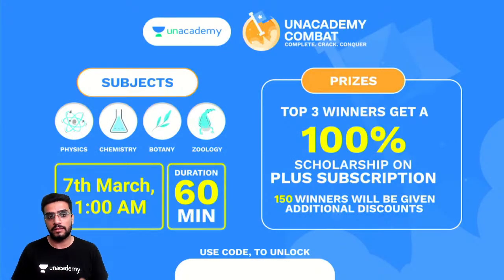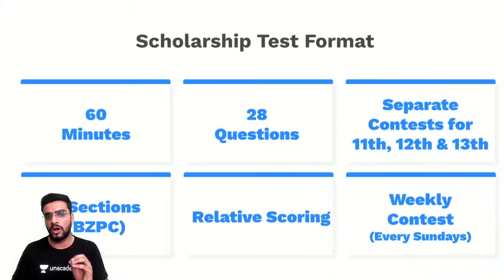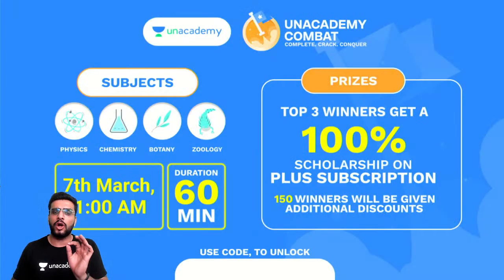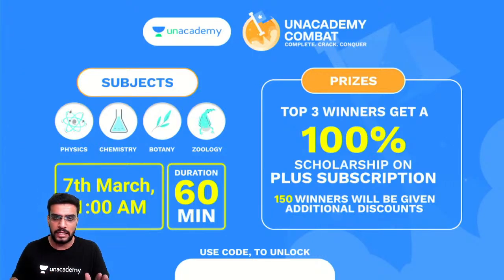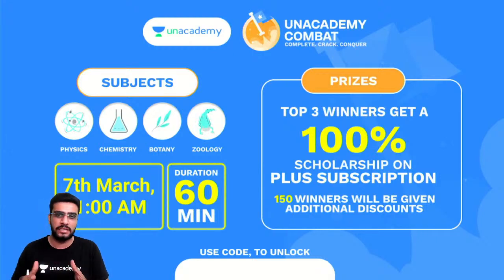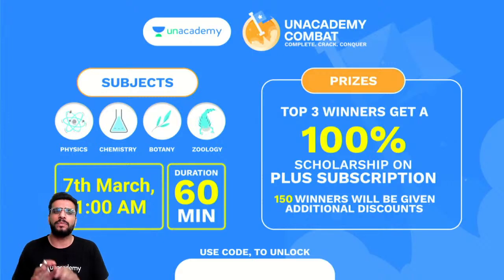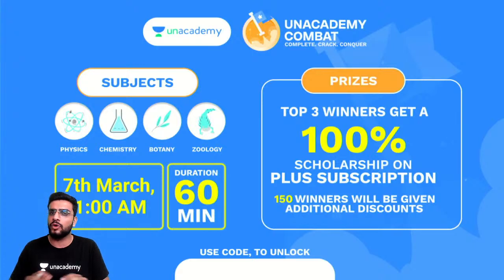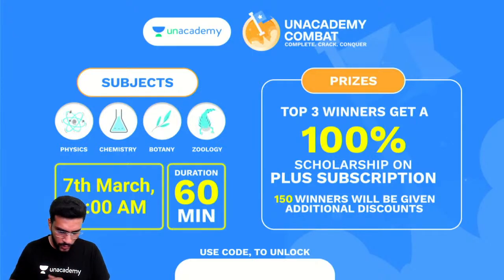Sabhi subjects — Physics, Chemistry, Zoology, Botany — 7th March ko 11 baje, 60 minutes ka test hoga. Top 3 winners ko 100% scholarship plus free subscription milega. 150 winners ko additional 25-30-50% discount milega. Kal 11 baje yeh test zaroor dena hai — free of cost hai. Yuvraj96 ka code laga dena. 60 minutes, 28 questions, 11th/12th/dropper ke badges alag honge.